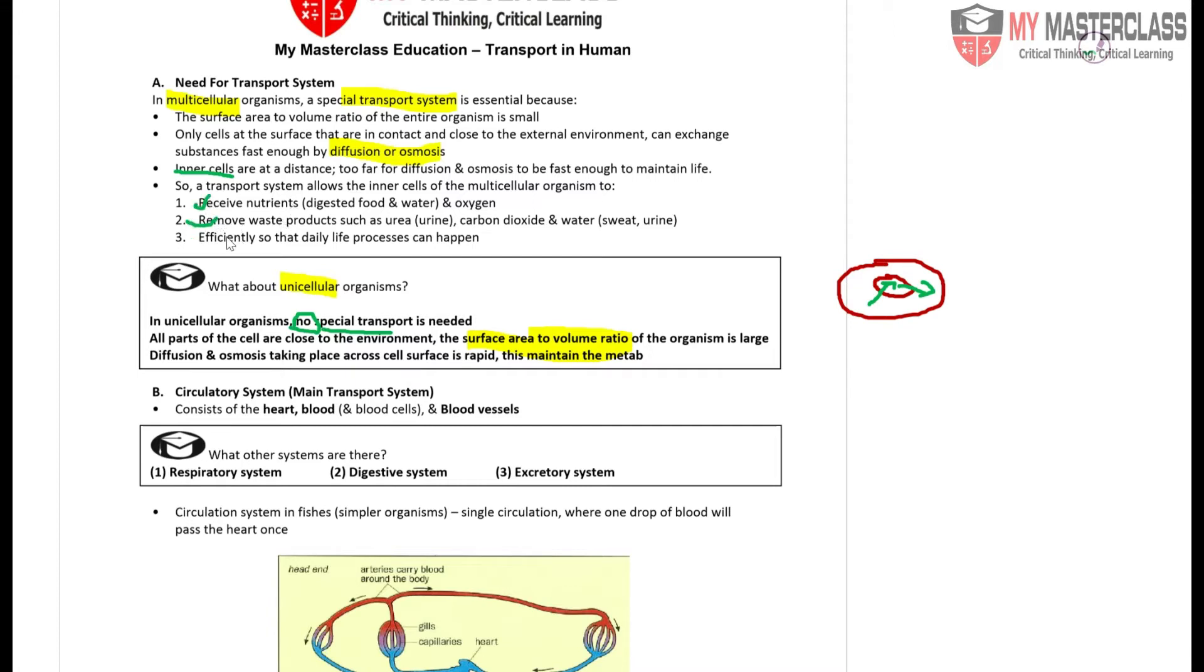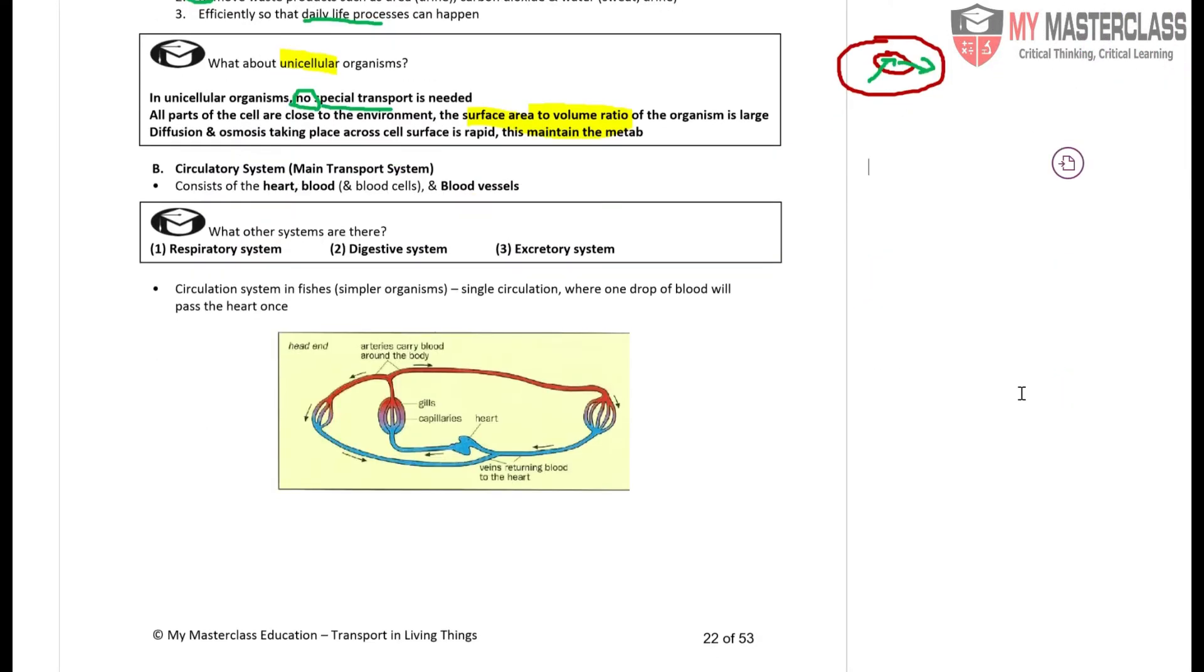When we talk about the system itself, recall the cellular organization level. To recap, I have cells. Multiple cells give me tissues, multiple tissues give me organs, and then I have organ systems which we are looking at now, and at the end I have my organism.